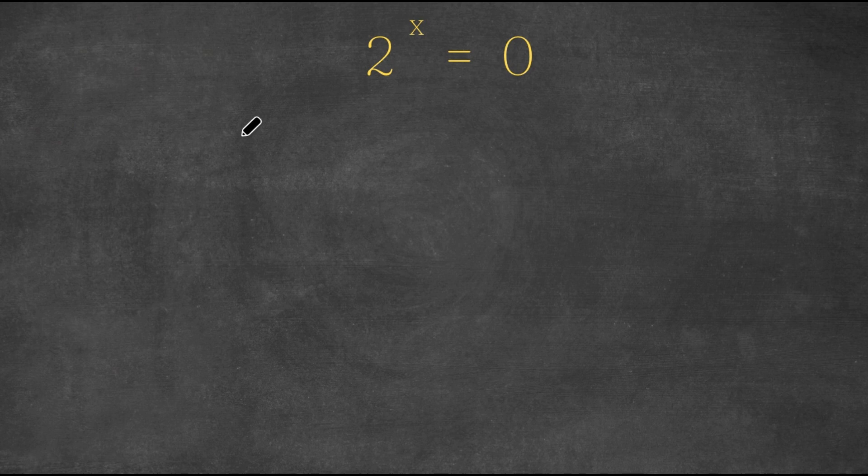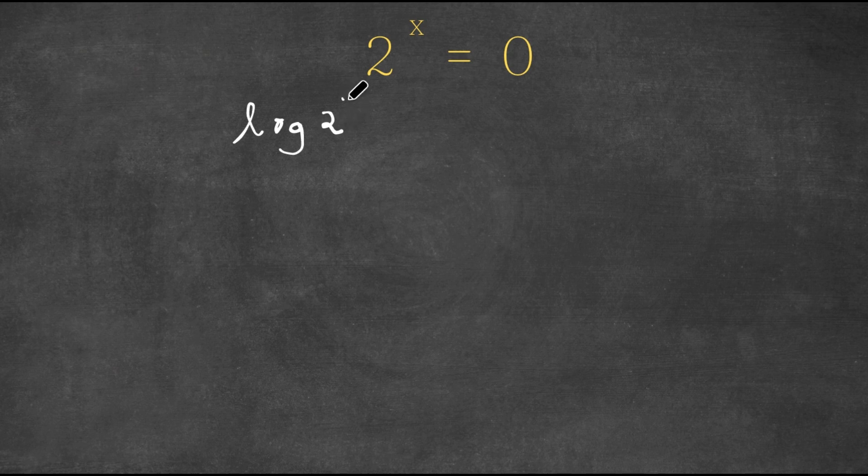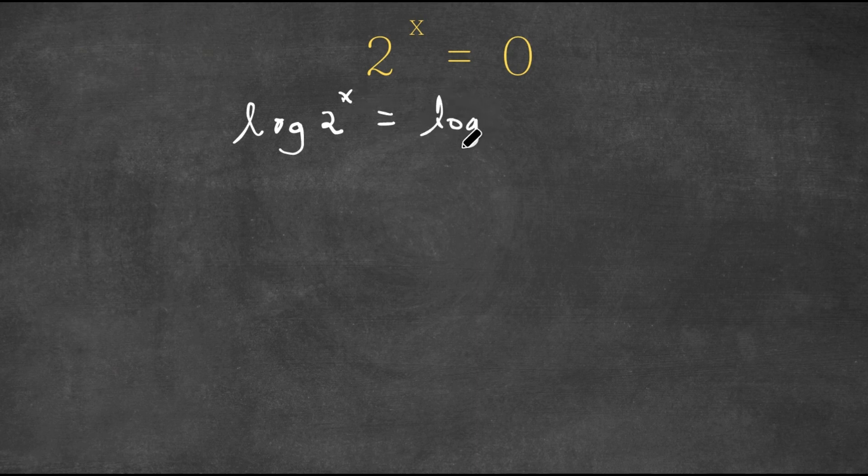First, I'm going to take the log on both sides. So now I have log 2 to the power of x is equal to log 0.